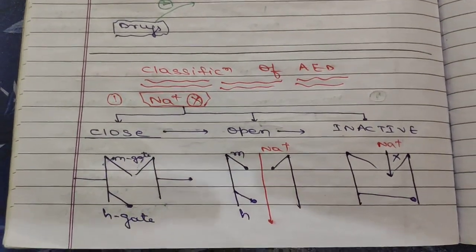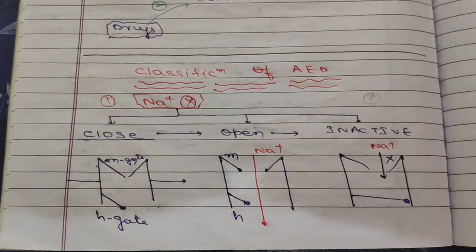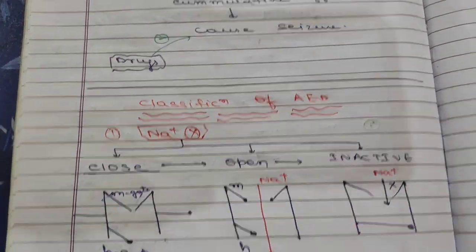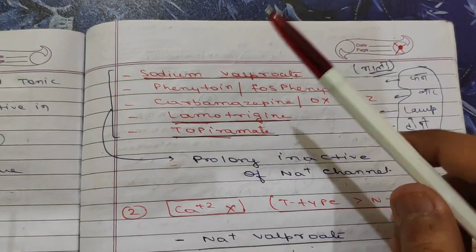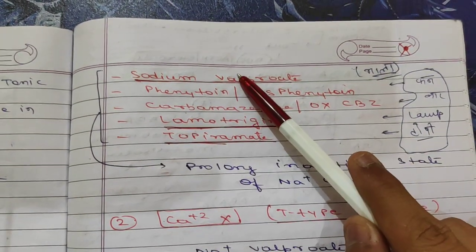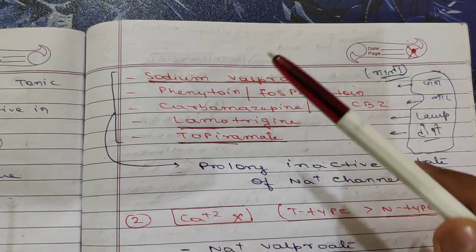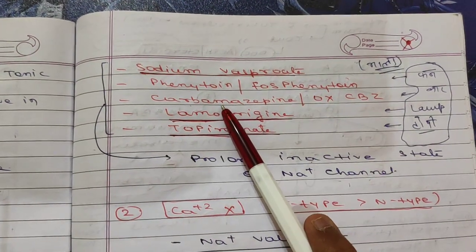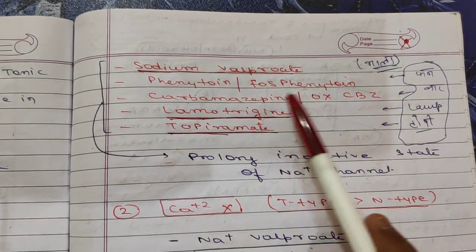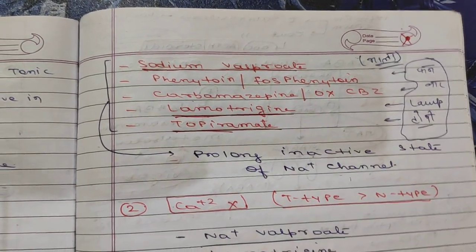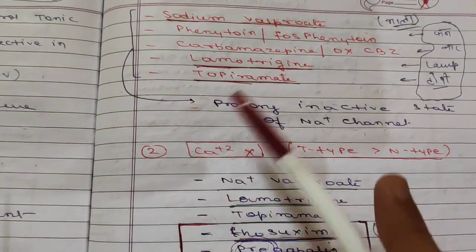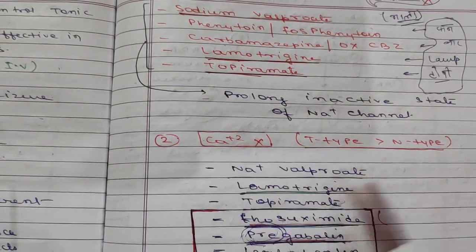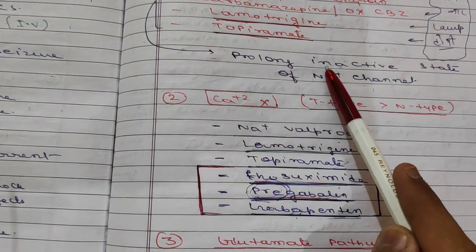In this video we are going to discuss the classification of anti-epileptic drugs. The first group is sodium channel inhibitors. Drugs included are: sodium valproate, phenytoin, carbamazepine, oxcarbazepine, lamotrigine, and topiramate. These five drugs prolong the inactive state of the sodium channel.